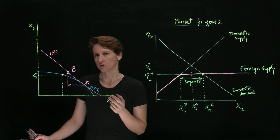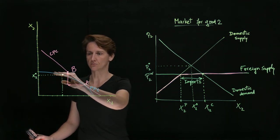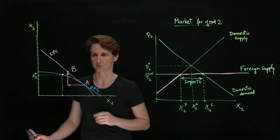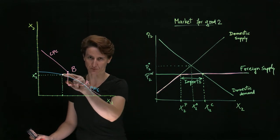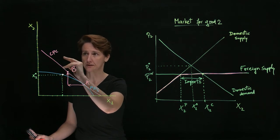We didn't talk about an internal price, but if we wanted to, we could. It would be simply shown by the slope of the production possibilities curve at that point of production. Here, that slope is relatively flat, so good two is relatively expensive.